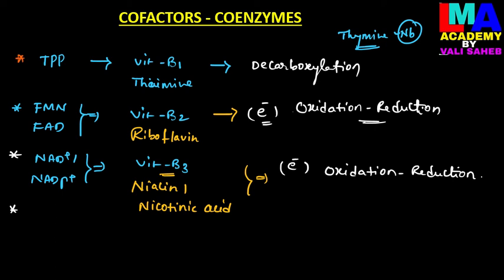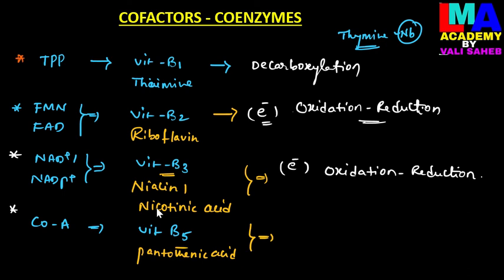Coenzyme A is a coenzyme derived from vitamin B-5, whose chemical name is pantothenic acid. The function of coenzyme A is the transfer of acyl groups from one substrate molecule to another substrate molecule.